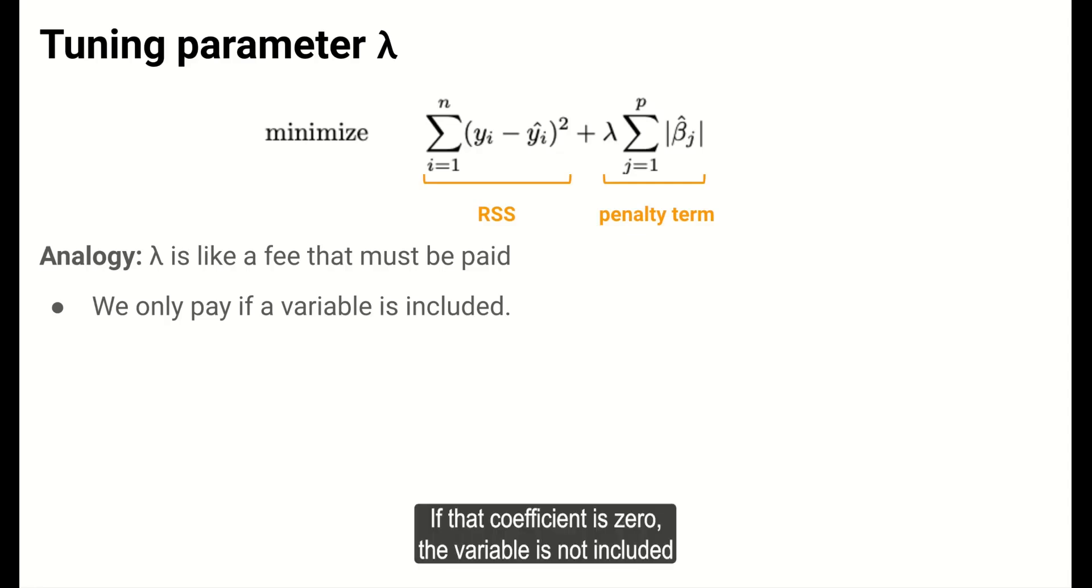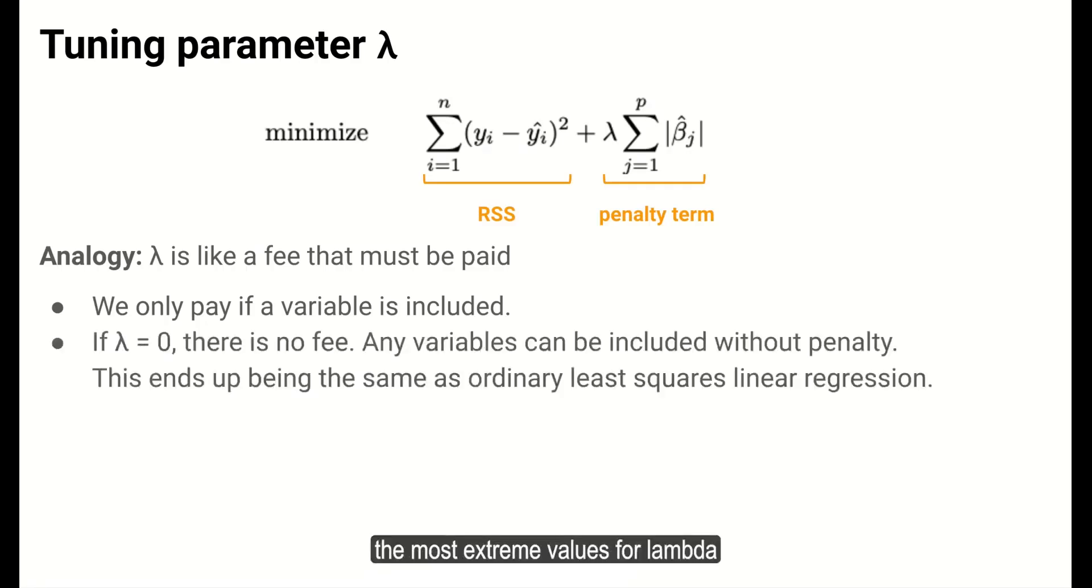If that coefficient is zero, the variable is not included, and we don't pay the lambda fee. Let's think about the most extreme values for lambda to get a better sense of how this penalty tuning parameter works.